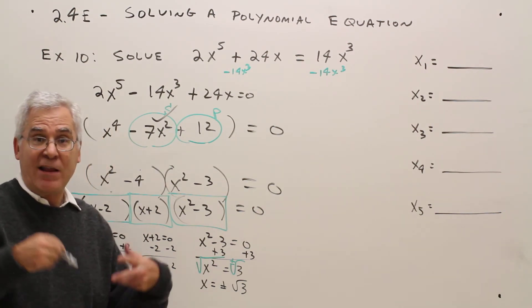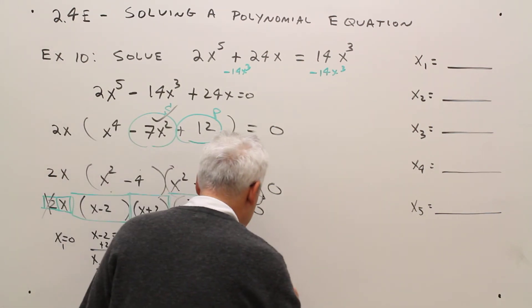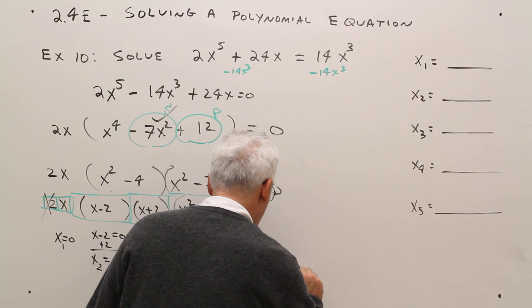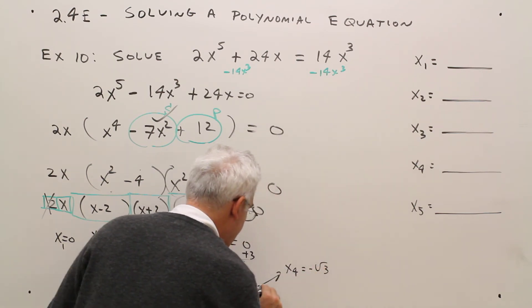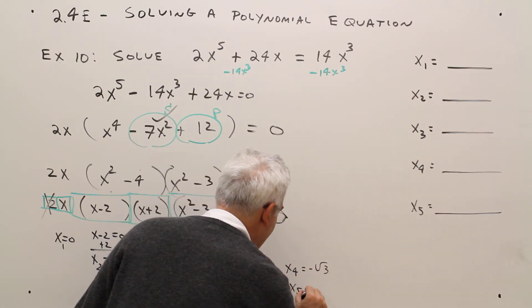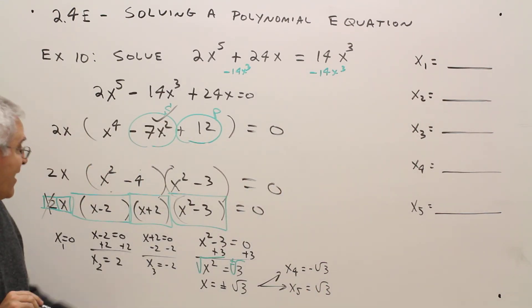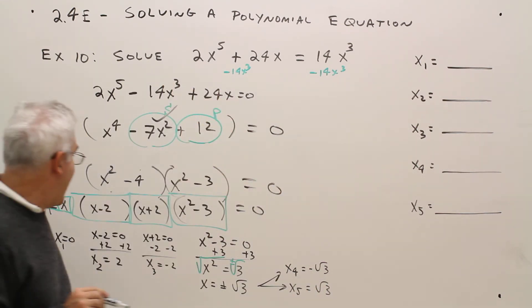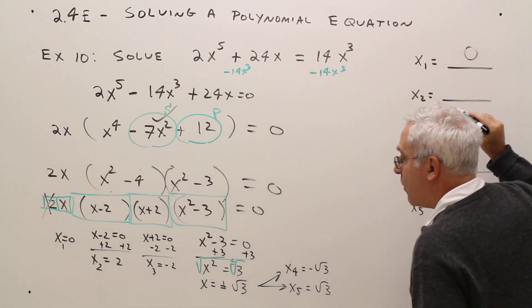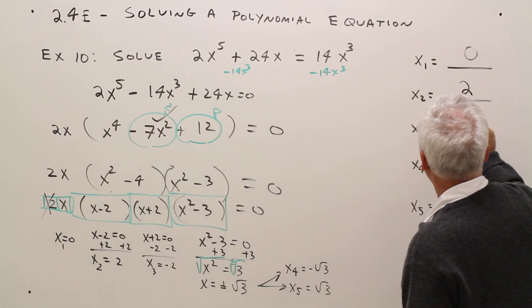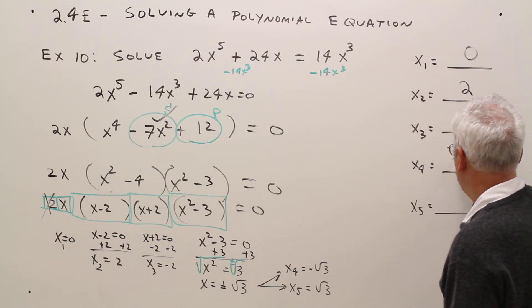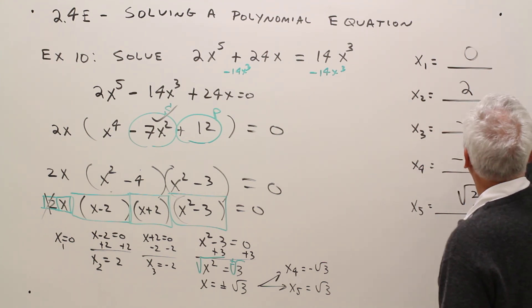And again, I'll just write that in two separate ways. So x sub 4 equals negative rad 3, and x sub 5 equals positive rad 3. And then if it were a test, you'd write them all in the answer blank. So I'll go 0, 2, negative 2, negative rad 3, and positive rad 3.